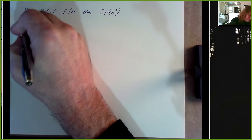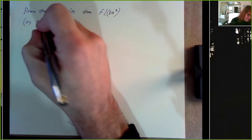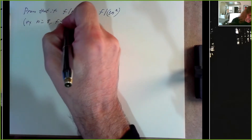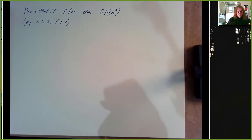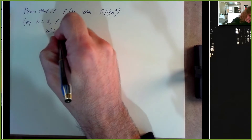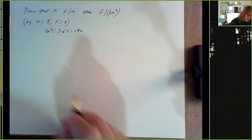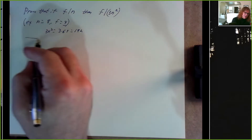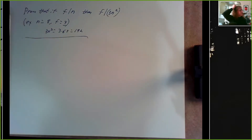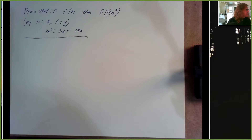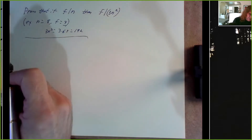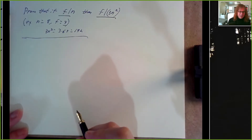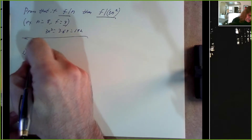For example, n equals 8 and f equals 4. So 4 divides 8. We know that 3n² is 3 times 64, which is 192, and that turns out to also be divisible by 4. So we have at least one case where we have reason to believe this is true. Let's try to do a proof: if f divides n, then f divides 3n². Start with the hypothesis: f divides n.